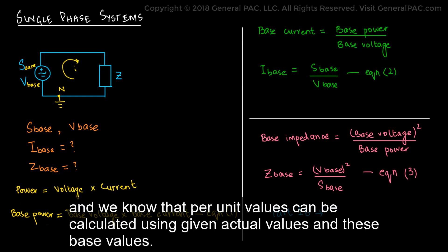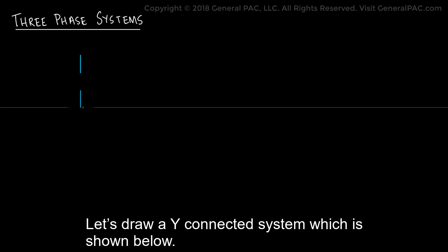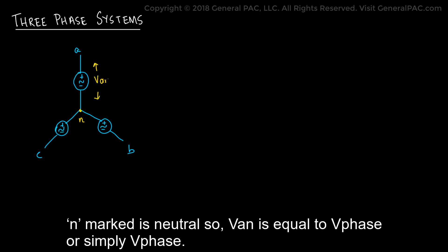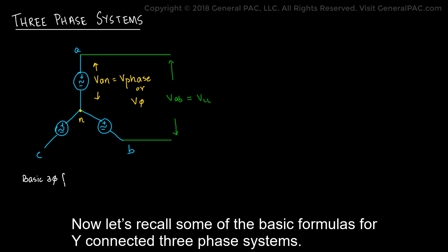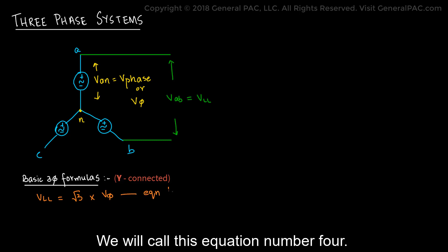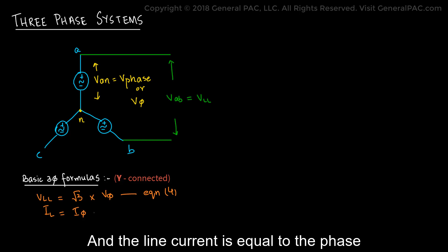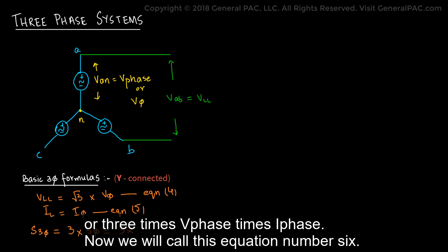These formulas were discussed in Part 1b, and per unit values can be calculated using actual values and these base values. Moving forward to three-phase systems, let's draw a Y-connected system. The N marked is neutral, so Van equals V_phase. The voltage between A and B is the line-to-line voltage, VAB or VLL. Recalling basic formulas for Y-connected three-phase systems: VLL = √3 × V_phase (equation 4); line current equals phase current (equation 5); and three-phase power equals three times single-phase power, or 3 × V_phase × I_phase (equation 6).